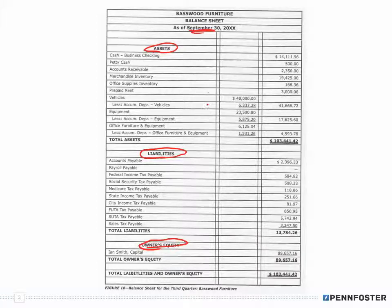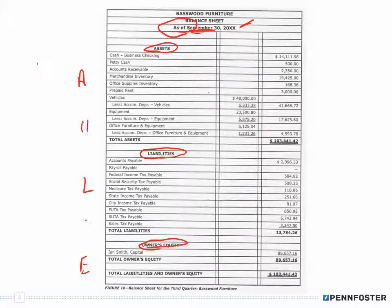You're going to be creating information from the trial balance that coincides with that specific accounting period. A balance sheet is always as of a specific date — just like the trial balance. If I had a trial balance dated November 13th, I can create a balance sheet as of November 13th. The reason is that asset accounts, liability accounts, and equity accounts — which form the accounting equation, assets equals liabilities plus owner's equity — are called permanent accounts.